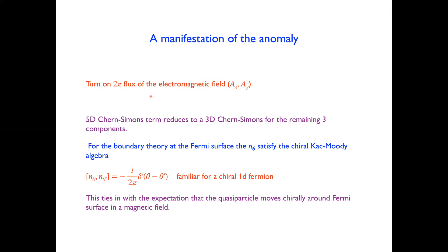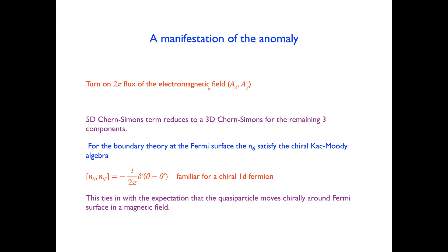Let's understand the anomaly from this point of view. Imagine that we turn on a 2-pi flux of the electromagnetic field A_x A_y. When we evaluate the 5D Chern-Simons term in the presence of this flux, for the remaining three components it reduces to a 3D Chern-Simons action. At the boundary theory at the Fermi surface, the n(theta)'s which commuted in the absence of the external 2-pi flux now stop commuting, and their commutation algebra is given by the familiar Kac-Moody algebra of a chiral 1D fermion. This ties in very nicely with the expectation that in a magnetic field, the quasi-particle moves chirally around the Fermi surface.